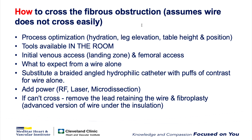How to cross a fibroplasty obstruction. We're going to talk about a situation where the wire just doesn't go right across easily and you're dealing with restricted catheter mobility. To cross an occlusion, you really need process optimization: the patient needs to be hydrated, legs elevated, proper table at the proper height, all tools in the room, and the initial venous access needs to be lateral. Femoral access can occasionally help as well.